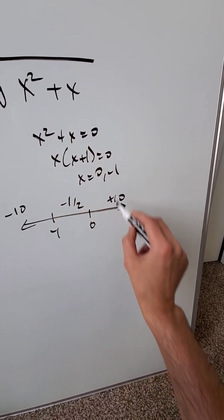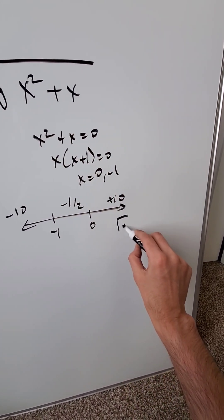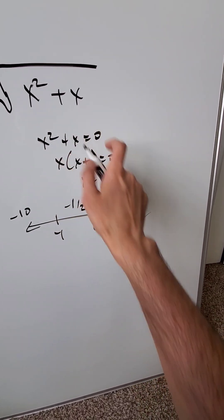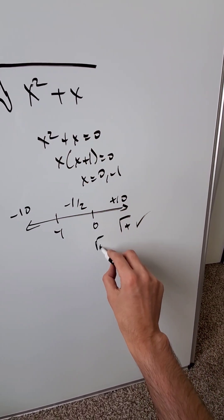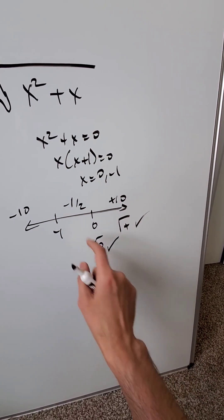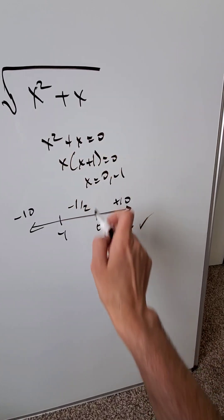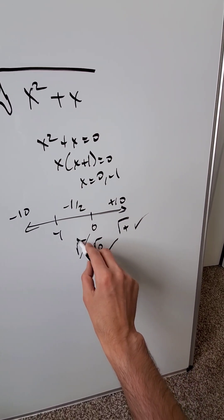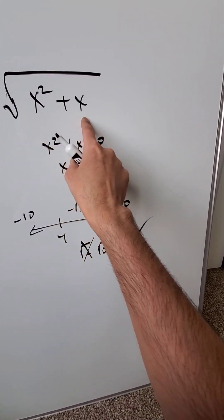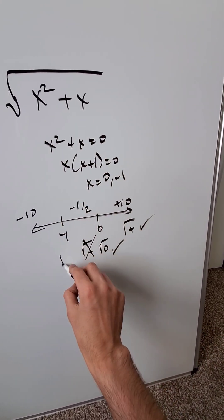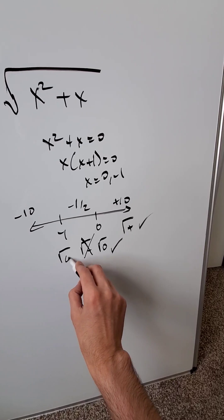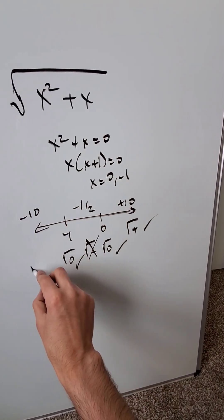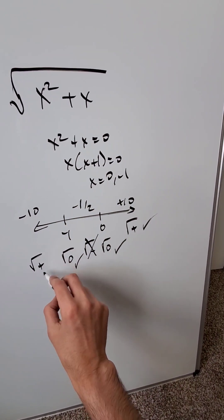When you put positive 10 in, you get the root of a positive value — that's acceptable. When you put 0 in, you get root of 0 — that's acceptable. When you put minus 1 over 2, you get a root of a negative value — you can't do that; for square root, you cannot. Put minus 1 in, you get root of 0 — that's acceptable. Put minus 10 in, you get root of a positive — that's acceptable.